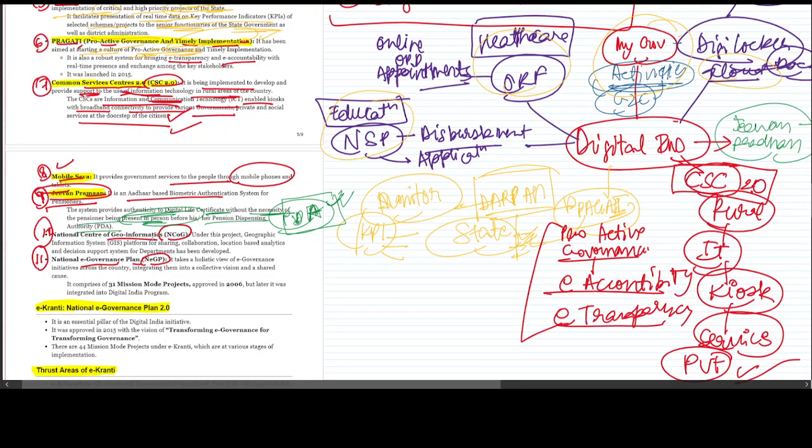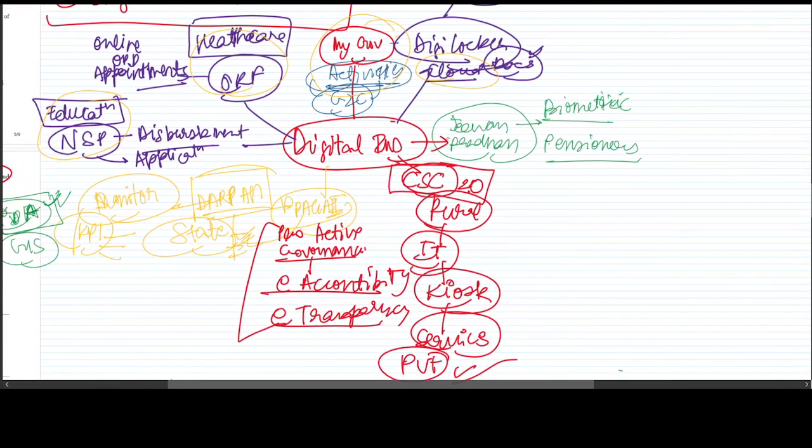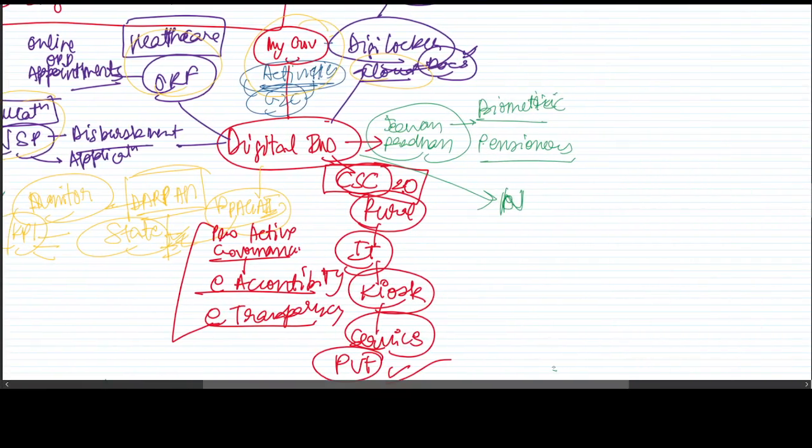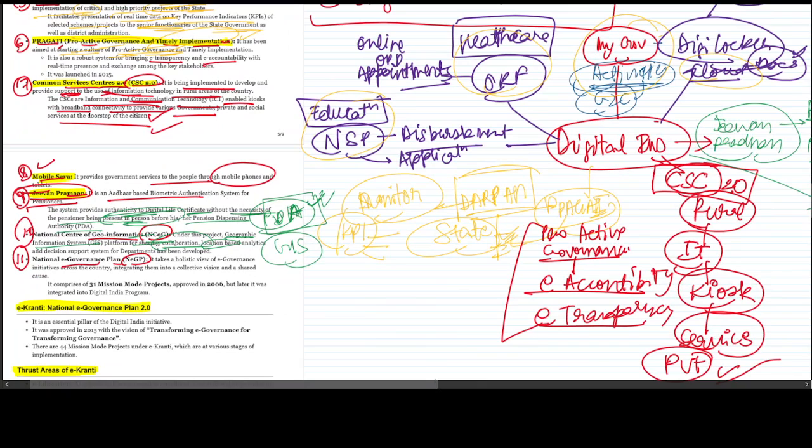National Center for Geoinformatics NCOG. Under this project, Geographic Information System GIS platform for sharing, collaboration, and location-based analytics. NCOG is for geoinformatics, which means geographical indications and geographical knowledge. Decision support systems for departments has been developed.